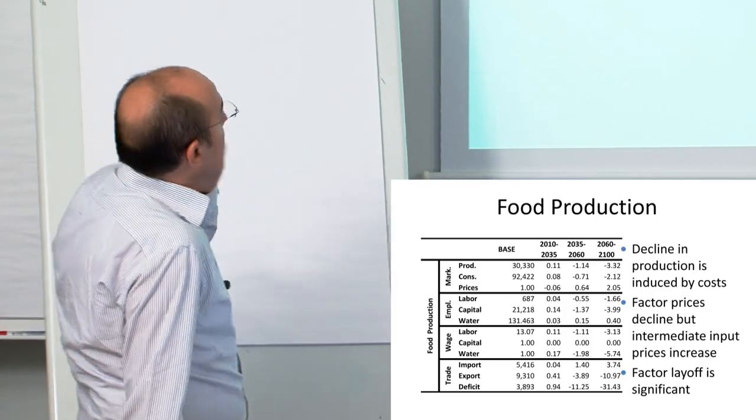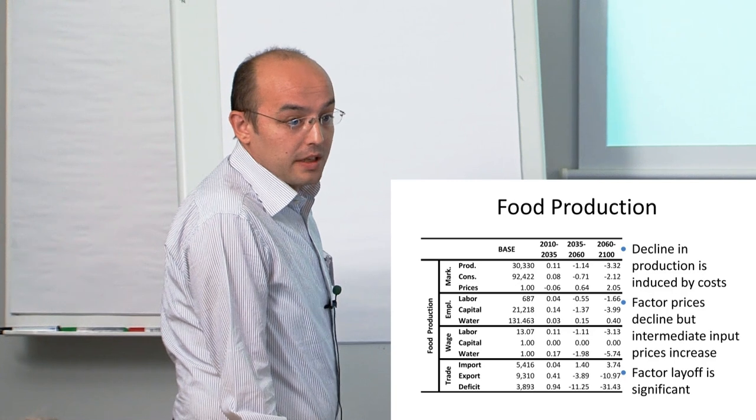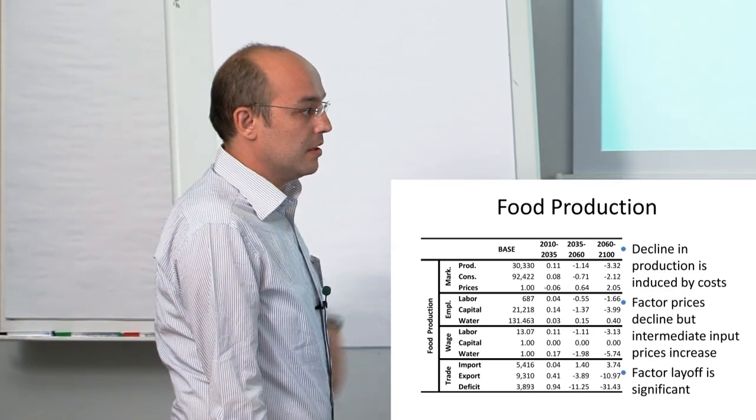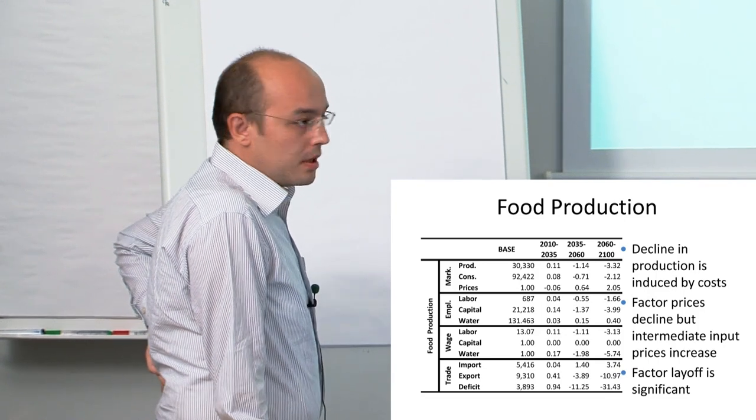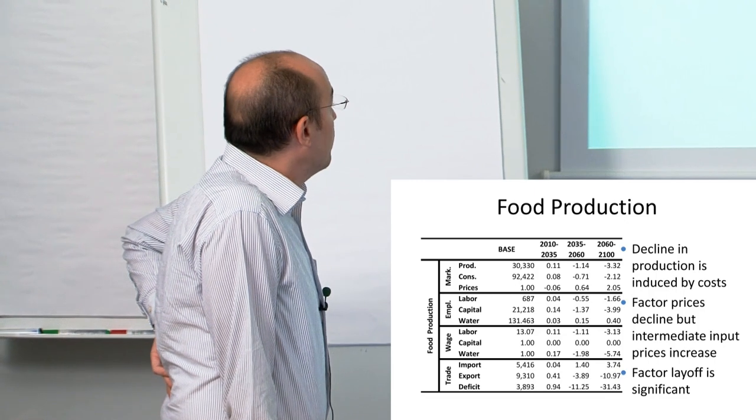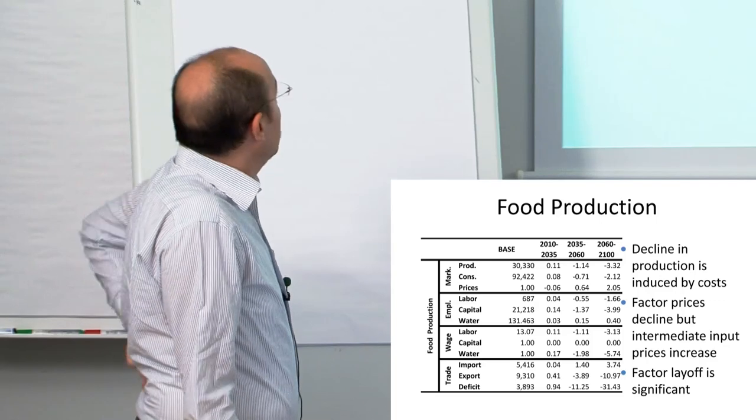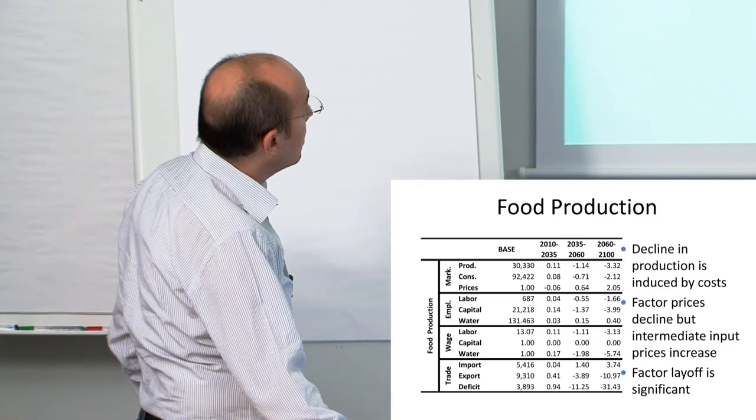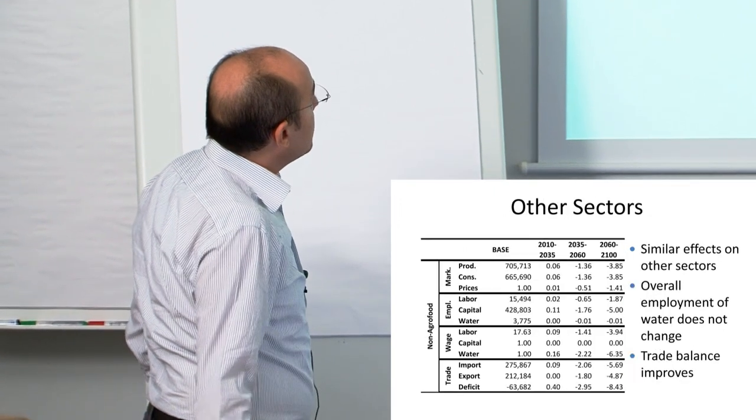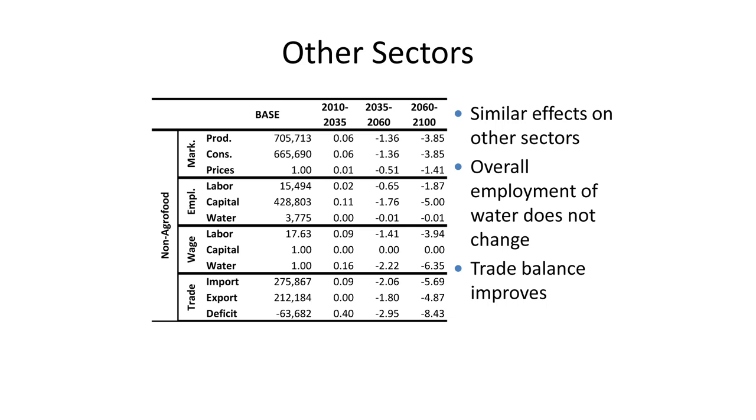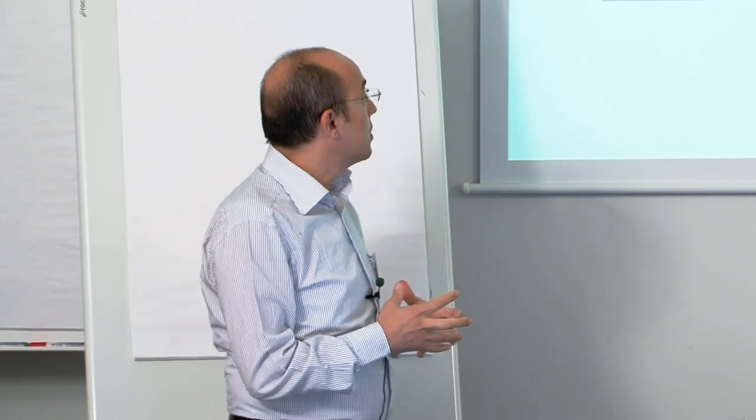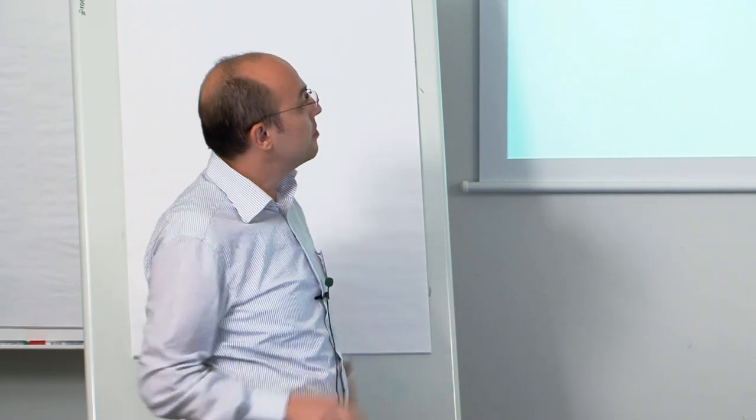In food production, the decline is because of costs caused by agricultural products, which is a significant item in the input-output table. Factor prices decline, but intermediate input prices increase, especially agriculture. There's significant factor layoff in food production. For other sectors, there are similar effects. Overall employment of water doesn't change because it's fixed. Trade balance improves overall. When you increase food imports and decrease exports, you need to pay from somewhere. You give up some trade in other sectors.